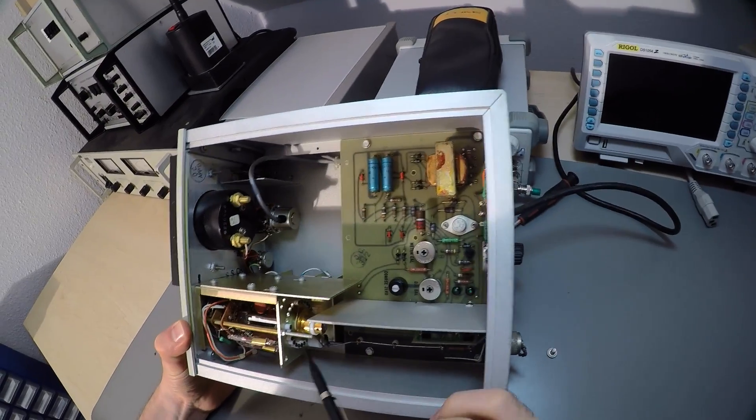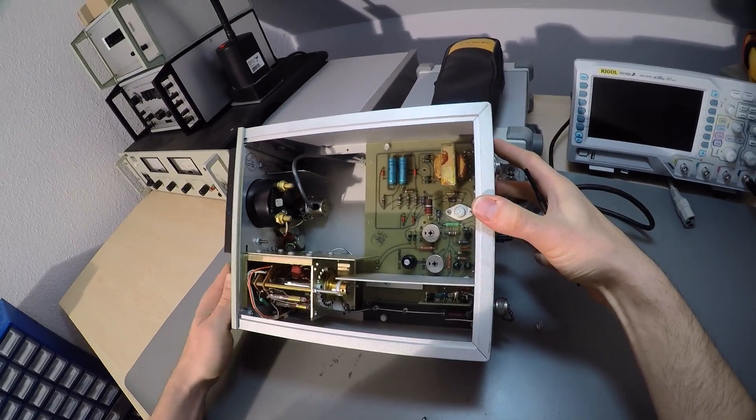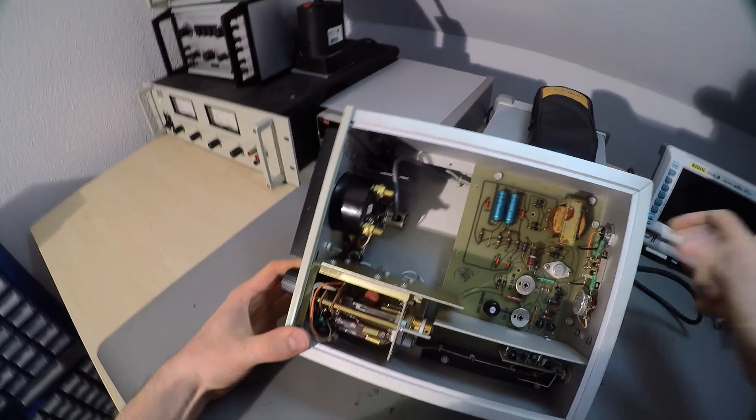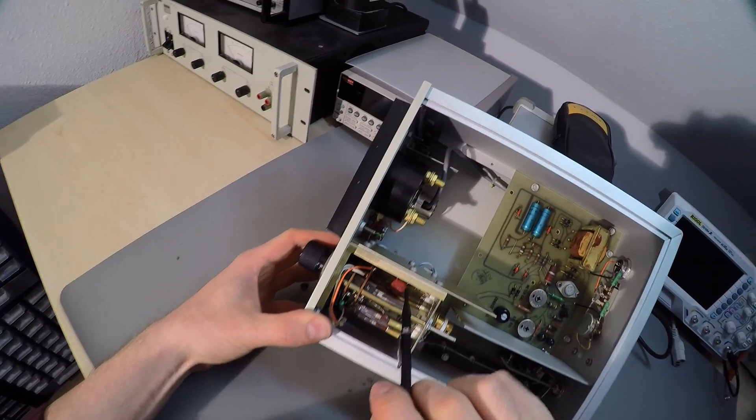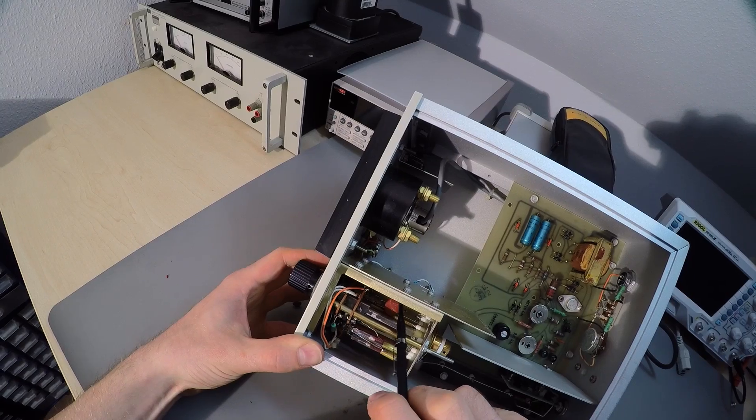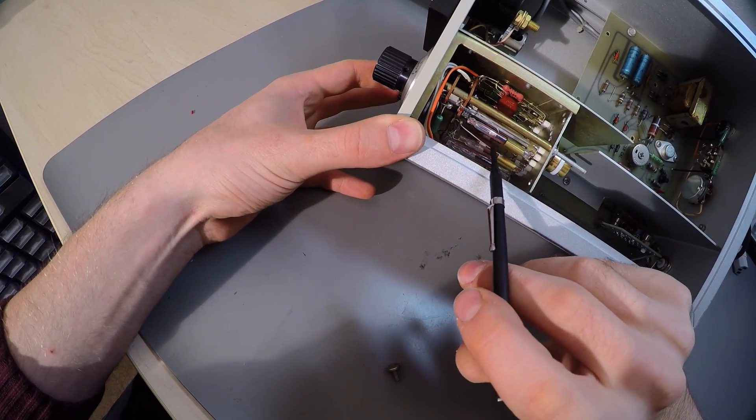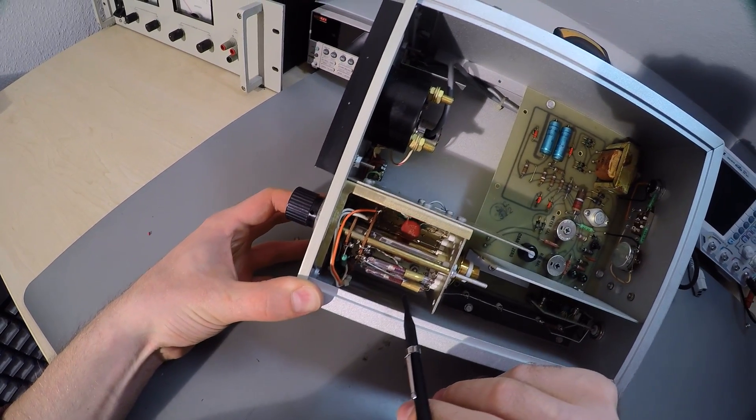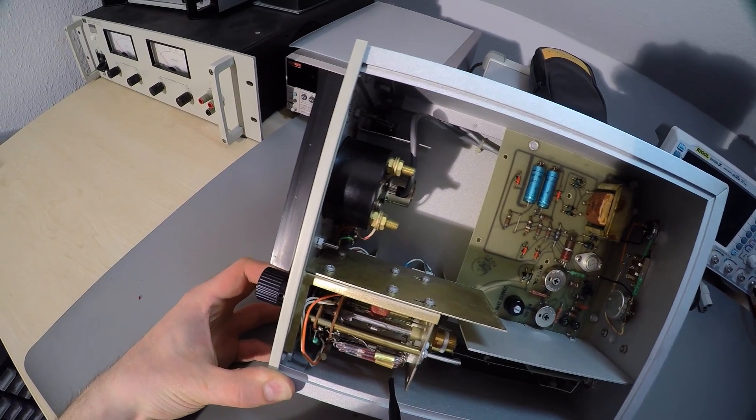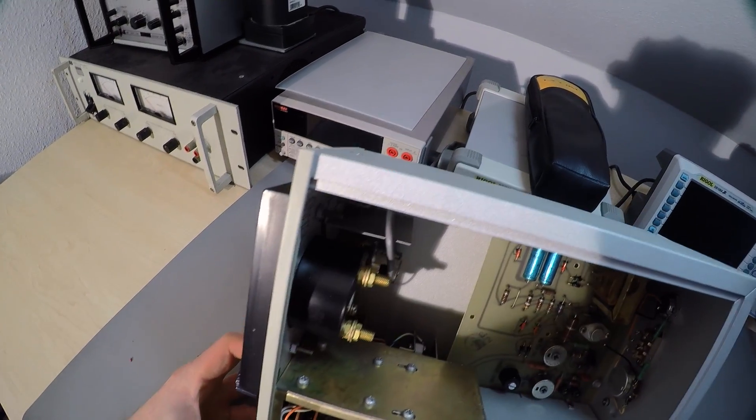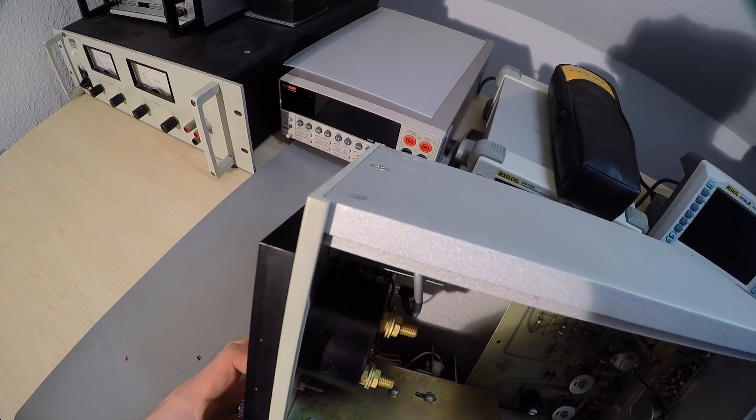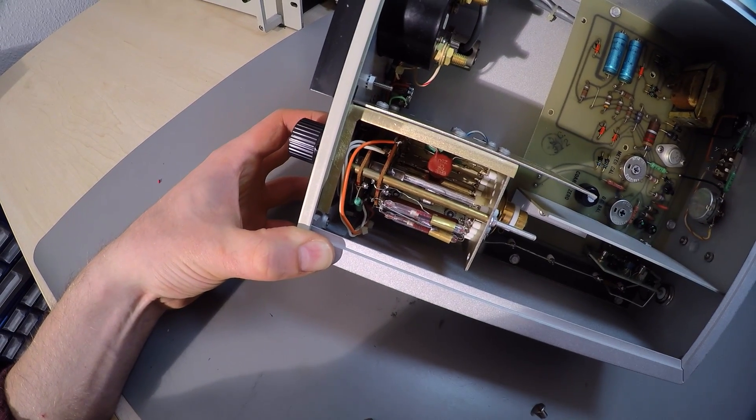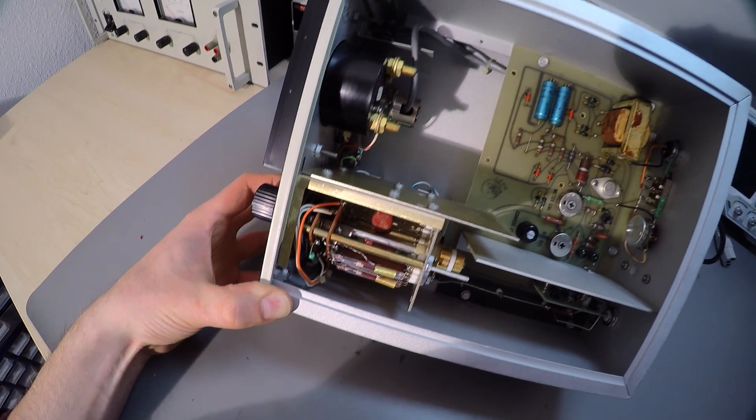Where we have 10 times 10 to the negative 4 selected right now. That equals 1mA full scale, the highest range that this meter can measure. In this range we have a fairly ordinary resistor value selected. But as we go down to the ranges for smaller currents the resistor values get bigger and bigger. Until finally in the lowest range we get a 100Mohm 1% resistor in its glass encapsulation.